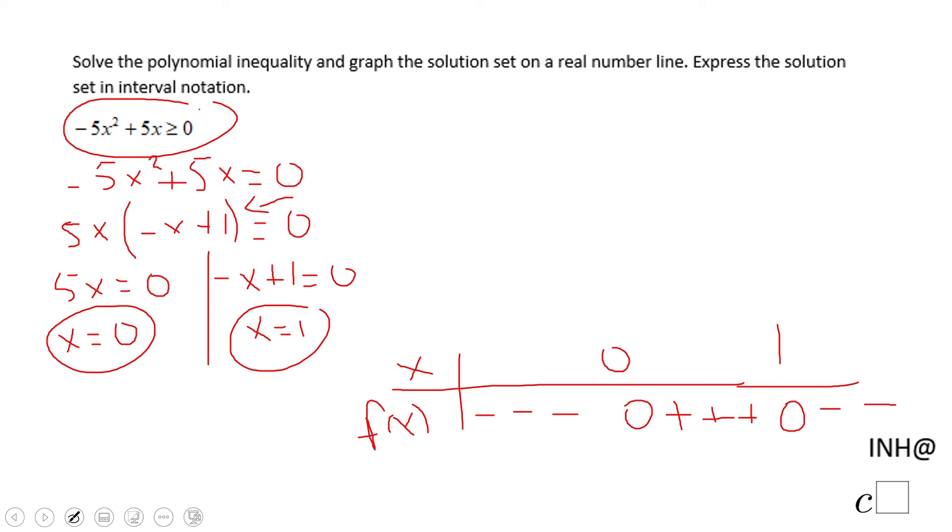So now we're going to look back to our original problem, which says greater or equal to zero. So the interval will be zero to one. Between zero and one, this polynomial will be greater than zero. Zero to one, that is the answer.